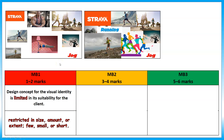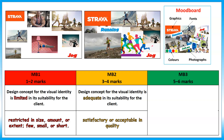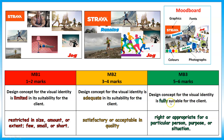Moving on to mood board number two, which is 'adequate' — satisfactory or acceptable. The vast majority of pictures are something to do with running, though there's one cyclist which isn't quite appropriate. There are photographs and graphics mixed together and a couple of fonts, but there's no color palette. It's better than the basic version but could be a little bit better.